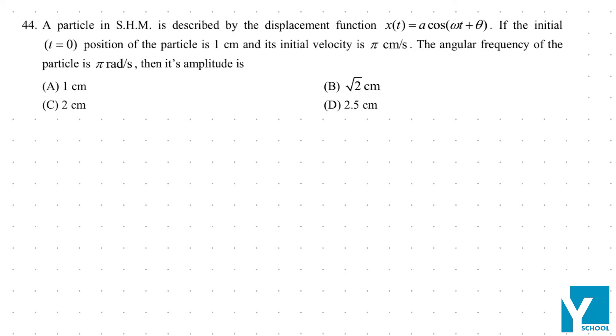A particle in SHM is described by the displacement function x(t) = a cos(ωt + θ). If the initial position of the particle is 1 cm and its initial velocity is π cm/s, we define x0 and v0 for ease. The angular frequency of the particle is π rad/s, then the amplitude is—so you already know something.